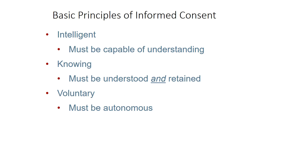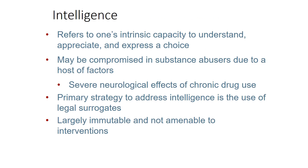The basic principles of informed consent: its intent is essentially that individuals must be capable of understanding the information — this gets at the issue of capacity. Knowingness means that participants must understand and be able to retain the information provided at the outset of research. And of course, voluntariness — so that individuals are able to make autonomous decisions about their participation. Beginning with intelligence, we're referring to the intrinsic capacity to understand, appreciate, and express a choice.